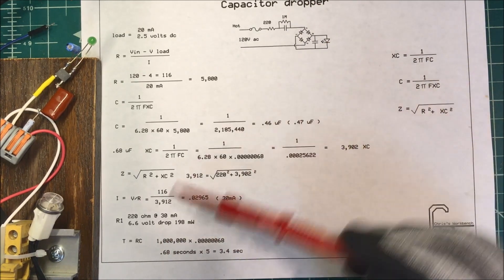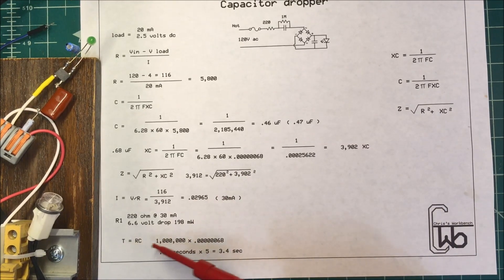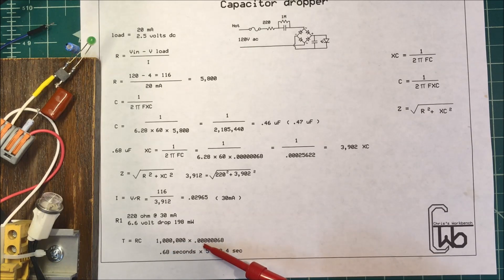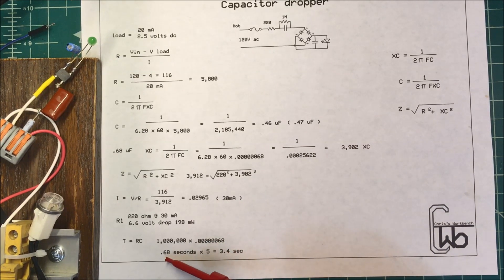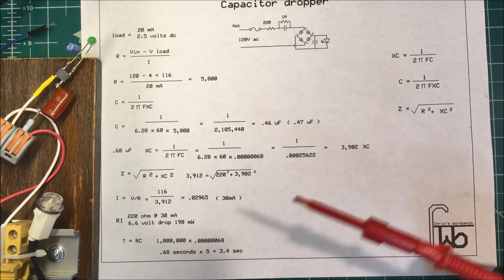To calculate that, it's just the time constant, it's going to be the 1 meg times the 0.46 or 0.68 microfarad capacitor. And so it comes out to 0.68 seconds to reduce the voltage 63 percent.